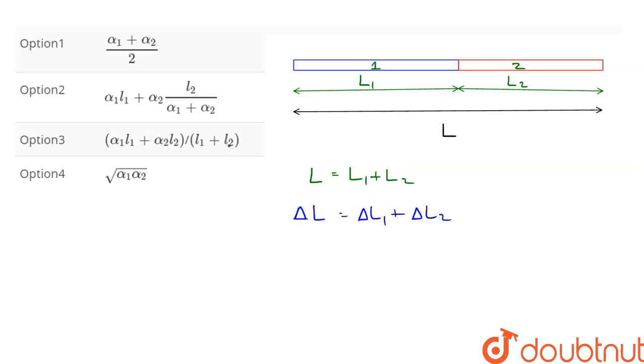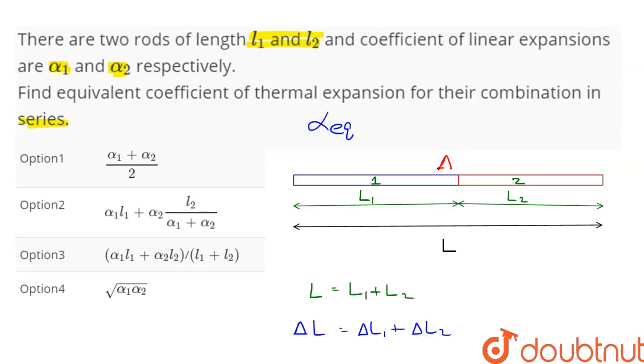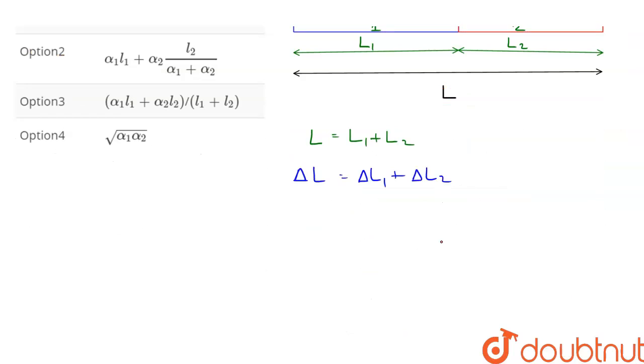Now, when the increase in temperature of both rods is ΔT, the respective changes in length are: ΔL₁ equals α₁ΔT times L₁